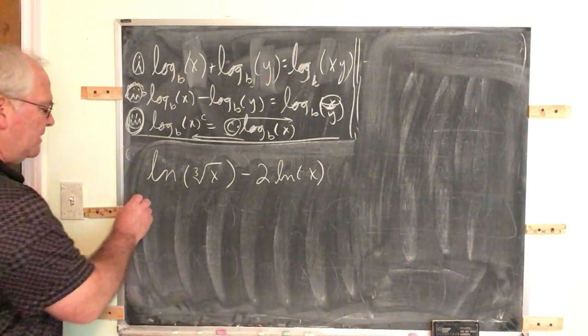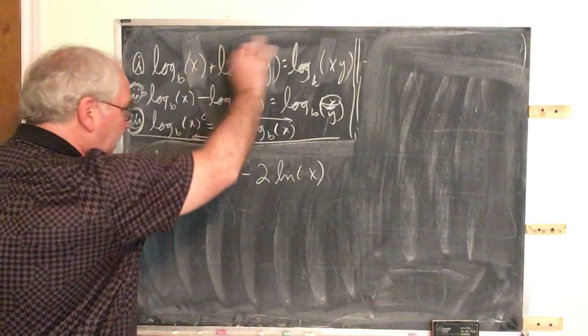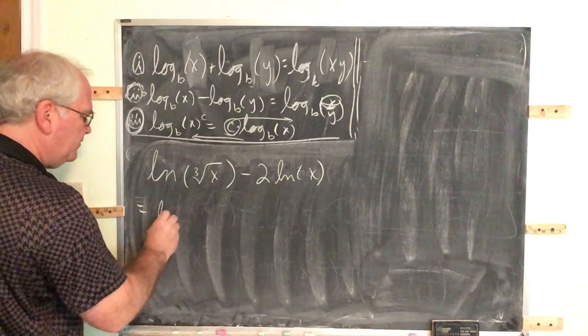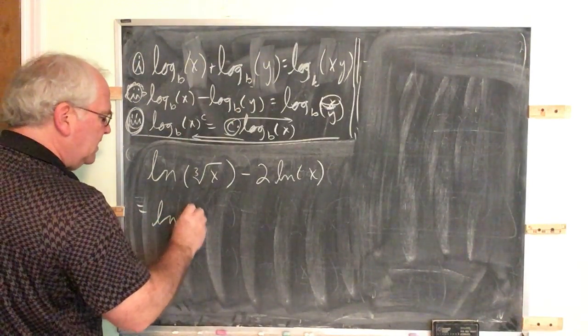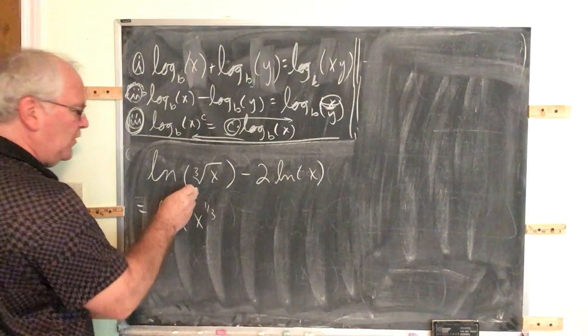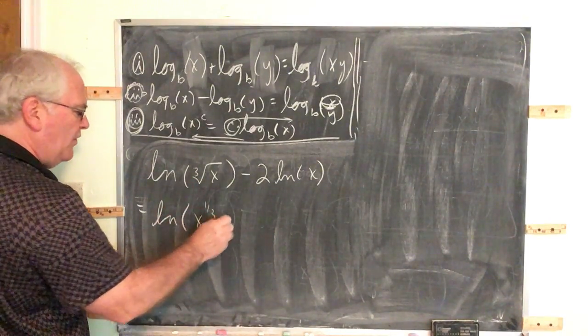So rewrite in exponential form. Before you do any computation, any properties at all, rewrite this in exponential form. We know that third root, third root is one-third power.